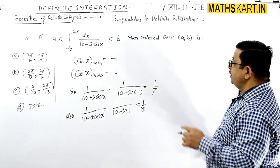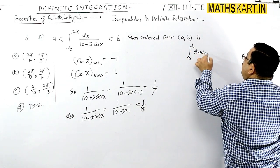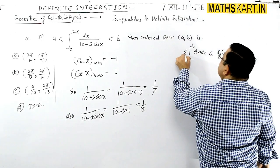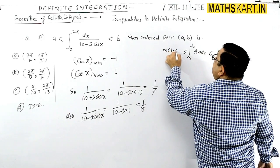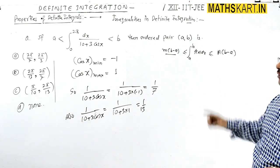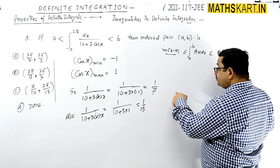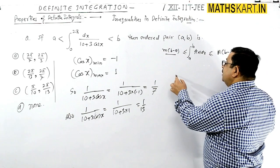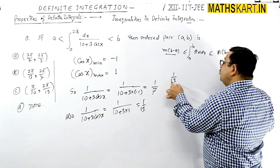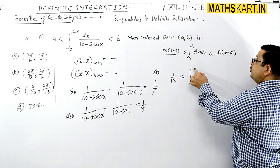So now we will use the property. We will write: integral from a to b of f(x) dx is less than or equal to capital M times (b minus a). And this lies between m times (b minus a). We will write this value, or we will integrate this directly. As per the property, directly you can write: this is lying between 1 by 7, which is the bigger value, and 1 by 13, which is the smaller value.